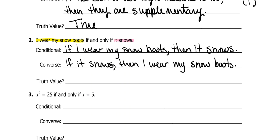Let's talk about the truth values. The conditional says: if I wear my snow boots, then it snows. That means whenever you put on snow boots it's going to snow — we wear snow boots here in Houston and it doesn't make it snow, so this is false. The next one: if it snows, then I wear my snow boots — that would be true, because if it snows you wear snow boots so your feet don't get soaking wet. But remember, for a biconditional both have to be true. The biconditional is false because both are not true.